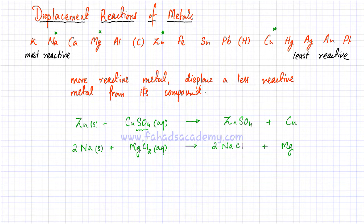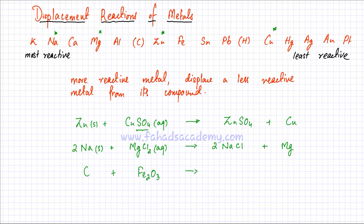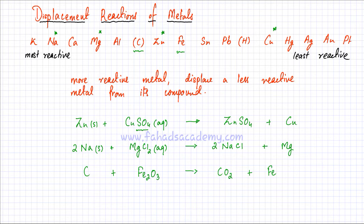The basic idea of a displacement reaction is that the more reactive metal displaces the less reactive metal. There are also non-metals in the reactivity series — carbon and hydrogen. For example, if we add carbon with iron oxide Fe2O3, carbon is more reactive than iron. Carbon takes away all the oxygen from Fe2O3, forming carbon dioxide, and Fe is left alone. Balancing gives: 2Fe2O3 + 3C → 4Fe + 3CO2.